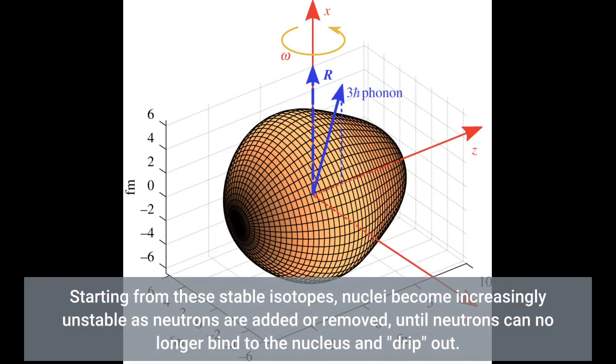Starting from these stable isotopes, nuclei become increasingly unstable as neutrons are added or removed, until neutrons can no longer bind to the nucleus and drip out.